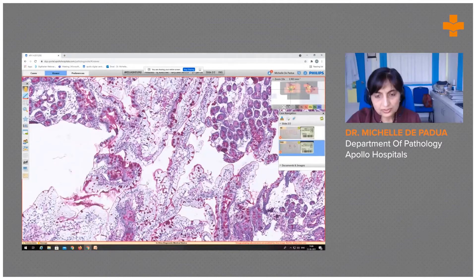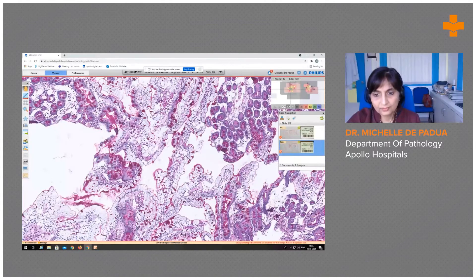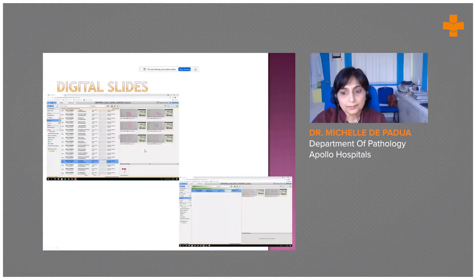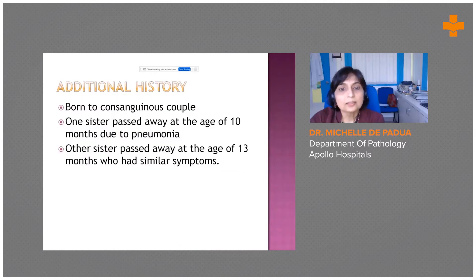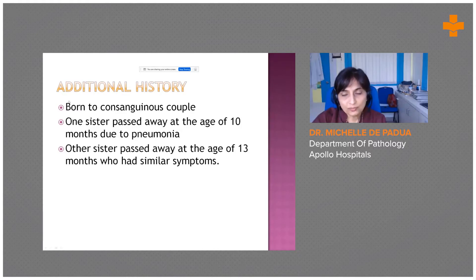Before making such a rare diagnosis on a single finding, it is advisable to talk to the gastroenterologist. I discussed this with the gastroenterologist, who provided additional history: the child was born to a consanguineous couple, suggesting a hereditary condition. One sister passed away at the age of 10 months due to pneumonia, and another sister passed away at 13 months with similar symptoms.